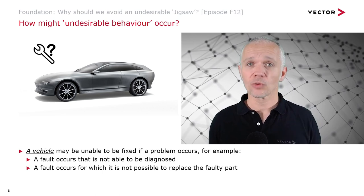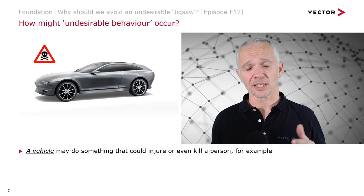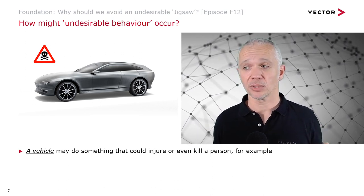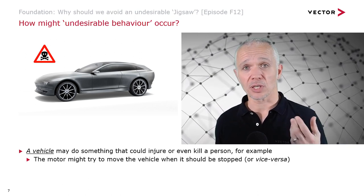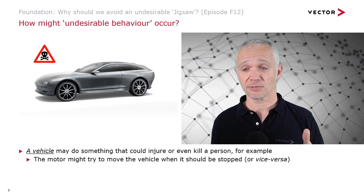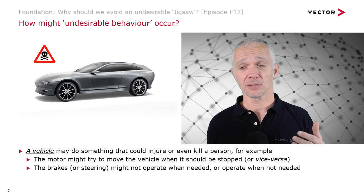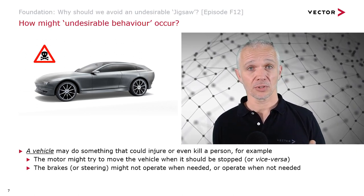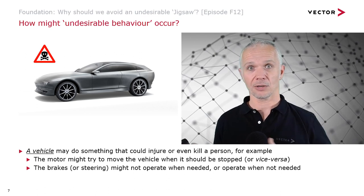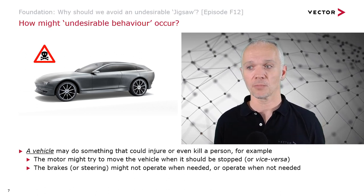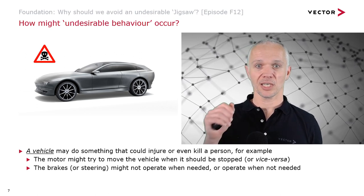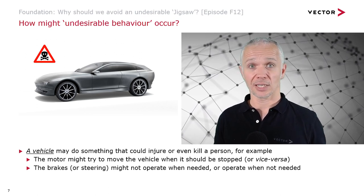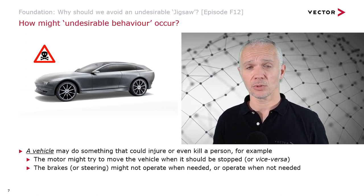Even more undesirable — bringing us back to our context — is the fact that a vehicle might do something that could injure or even kill somebody. For example, the motor might try to move the vehicle when it should be stopped, or vice versa. The brakes might not operate when needed, or they might operate when they aren't needed. The same applies to steering — a power steering system might try to steer you out of your lane and make you crash, or it might fight you and not let you steer.